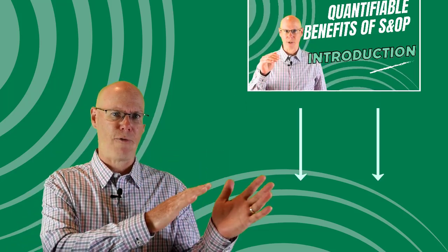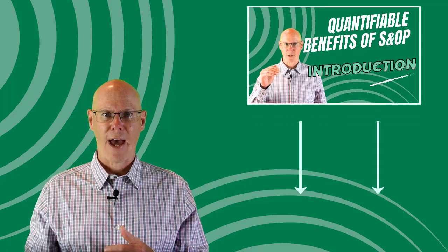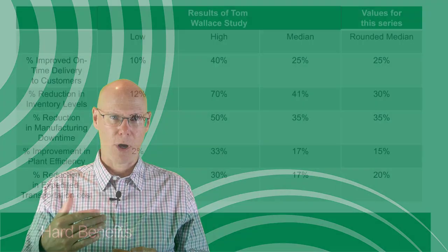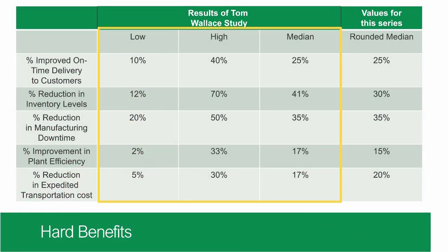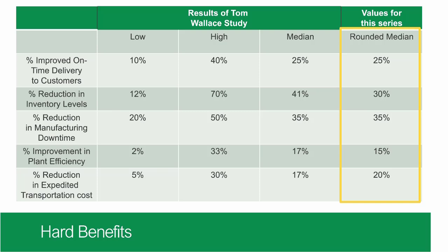If you haven't already, go back and watch the first video in the series — the link is below. In that video I introduced how generally S&OP can be linked to these business outcomes. I also introduced an expected improvement table that comes from research by Tom Wallace, the author of the Sales and Operations Planning How-To Handbook. Based on his research, this table has high and low values for each of these benefits and an expected or middle outcome as well.